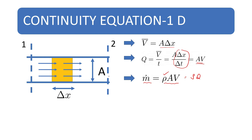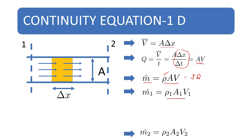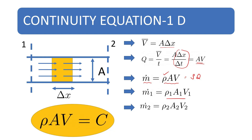If you take section 1 and section 2, ṁ₁ can be written as rho₁ A₁ V₁ and ṁ₂ can be written as rho₂ A₂ V₂. If no fluid is stored inside the pipe between sections 1 and 2, then ṁ₁ equals ṁ₂, giving rho₁ A₁ V₁ equal to rho₂ A₂ V₂.